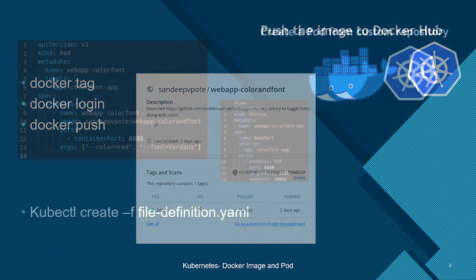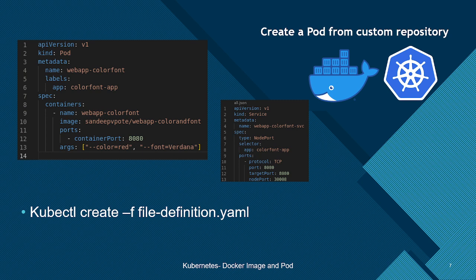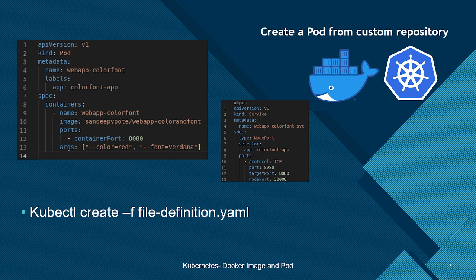Once tagged, we log in to Docker and push the image to this repository. Now once we have the image in Docker Hub, we start creating Kubernetes resources. In this case we'll create a pod named web-app-color-font. We'll label that pod so it can be identified uniquely — if there are 50 pods on your Kubernetes cluster, this pod will be identified by its name and label. We'll create a pod definition file with a spec mentioning the container, using the Docker Hub account name slash repository name as the image.